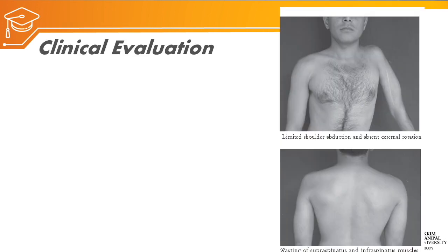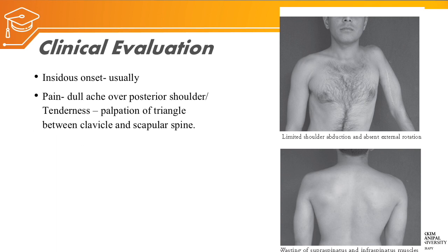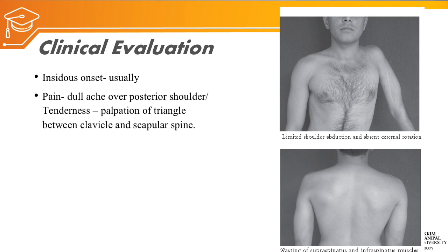What are the clinical presentations of suprascapular nerve injury? It is usually insidious in onset. The pain is dull and achy over the posterior shoulder, with tenderness on palpation of the triangle between the clavicle and scapular spine.